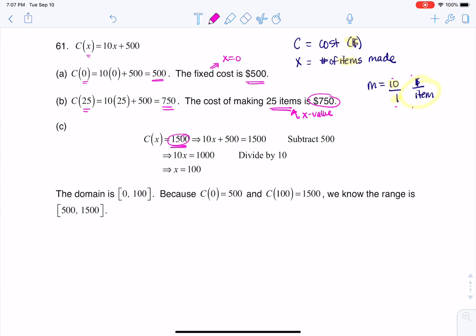Well, if I have a y value, or I guess technically in this case a c value, a cost value, I can solve for x here. And don't forget that once I solve for x, the units on this are 100 items. So if I make 100 items, it's going to cost me $1,500.